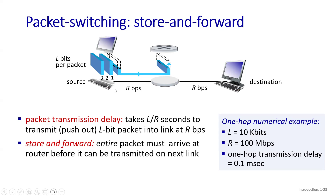If we consider the transmission delay between source and destination, we also have to take into account the transmission delay on the second link, which in our case is again 0.1 milliseconds. So the total transmission delay from source to destination is going to be 0.2 milliseconds.